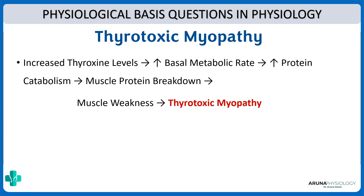Another question: what is the physiological basis for thyrotoxic myopathy? That is because of the effect of thyroid hormone on protein metabolism. When the amount of thyroid hormone is in excess it can cause increased protein catabolism, which in turn can lead to thyrotoxic myopathy — basically muscle weakness.